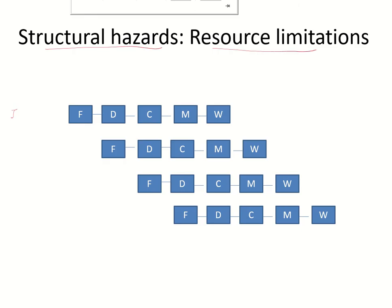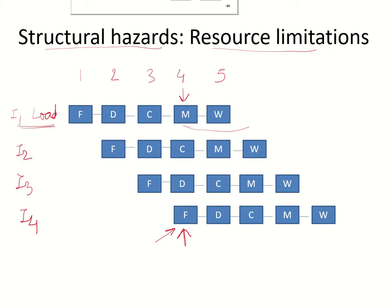Consider an instruction I1. Suppose this is a load or a store instruction which needs to access the memory in clock cycle 4. Suppose at the same time, in the same clock cycle, instruction I4 has to be fetched. So the processor hardware tries to fetch this instruction I4 by accessing the cache. I1 is trying to access the cache because it wants some data. Both the instructions are wanting to use the cache.